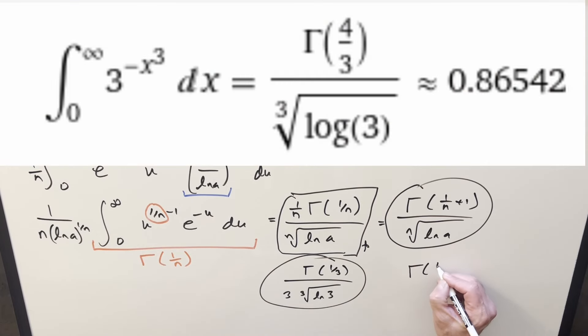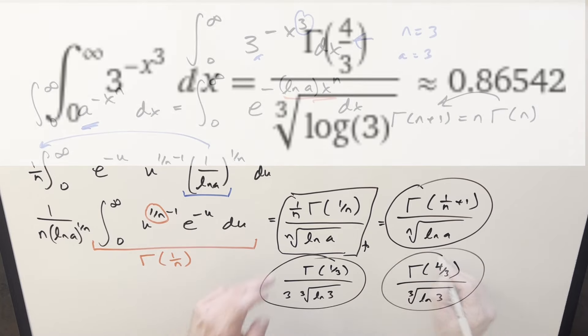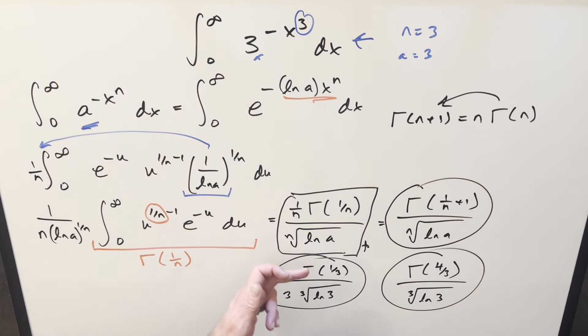And I think I'll write it the other way too. If we want to write it this way, if you prefer it this way, we can write this as gamma 4 thirds over cube root ln 3. And with this formula, it's still going to work when the base is e because natural log of e is just 1. So the denominator goes away and you get just the top part for the formula.